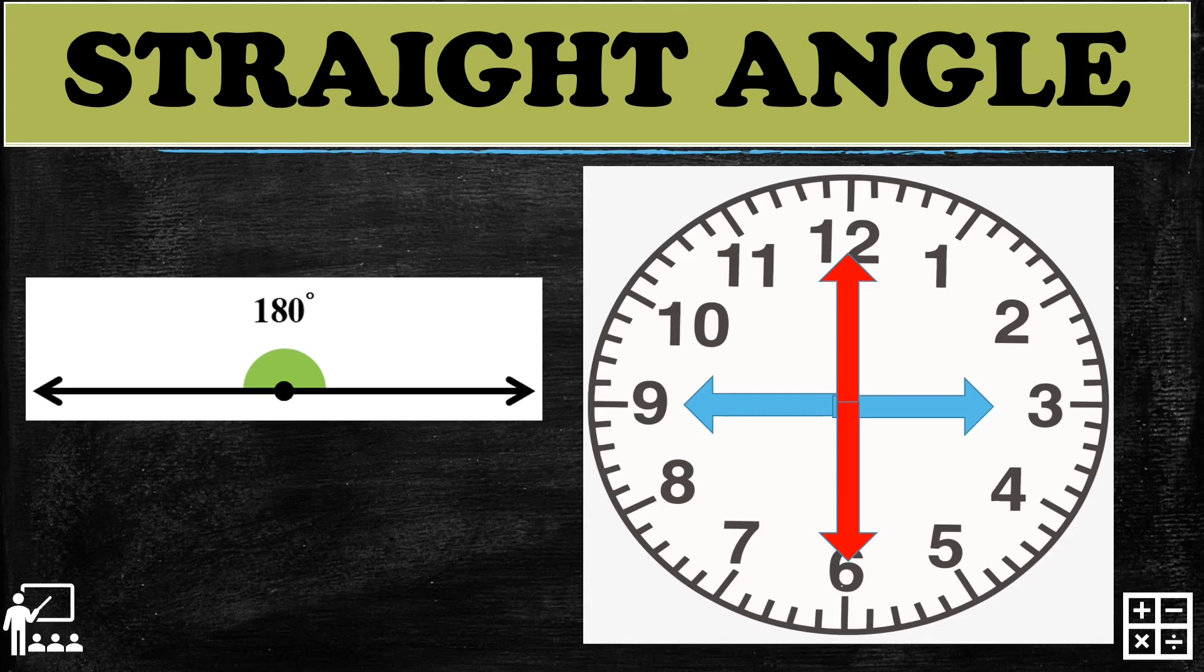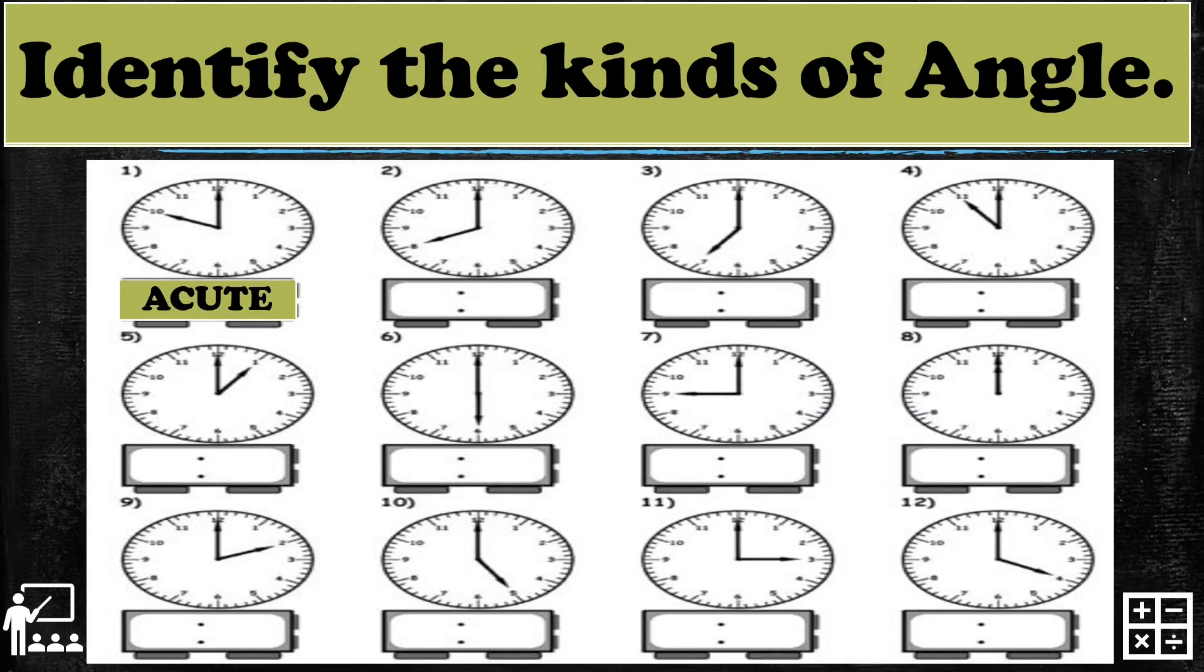Are you ready for the activity? I have 12 clocks to identify the kinds of angles. It can be a right angle, acute angle, obtuse angle, or straight angle. I'll give you one minute to answer this activity. Your one minute starts now.